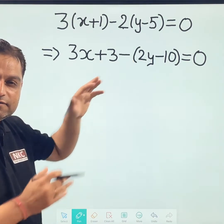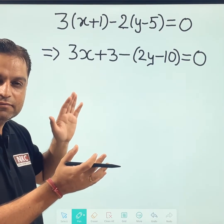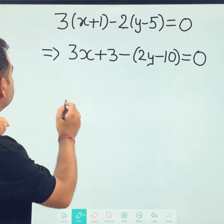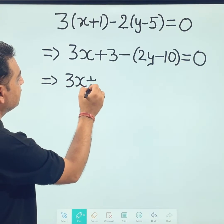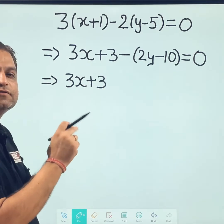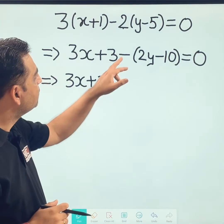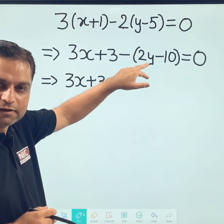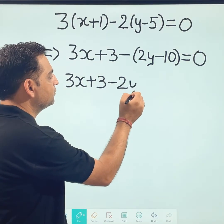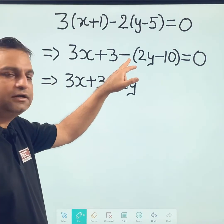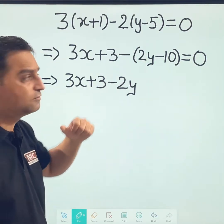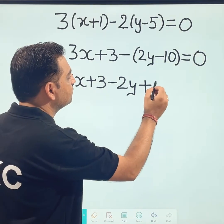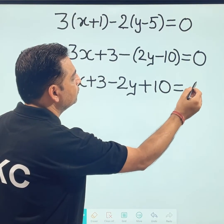Now, since this negative sign is there outside the bracket, what we can do, while opening the bracket now, 3x plus 3, all the signs will be changed. Means this negative sign when multiplied with 2y, it will be negative 2y. And this negative sign when multiplied with negative 10, minus and minus becomes plus. We will get plus 10 equal to 0.